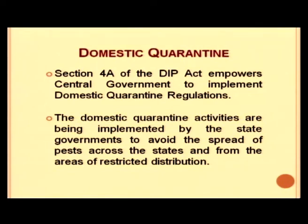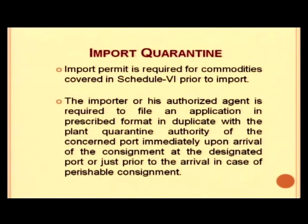Under the DIP Act, domestic quarantine is also exercised by DPPQS. Section 4A of the DIP Act empowers the central government to implement domestic quarantine regulations, which are implemented by state governments to avoid spread of pests across states and from areas of restricted distribution. For import quarantine, an import permit is required for commodities covered in Schedule 6 prior to import, and the importer or authorized agent must file an application in prescribed format before the consignment arrives at the port.